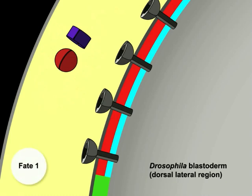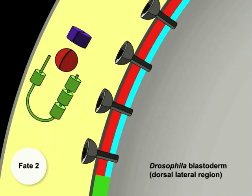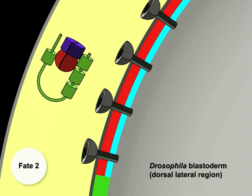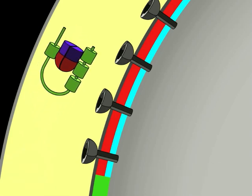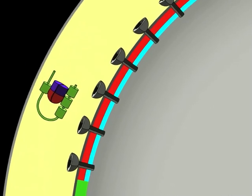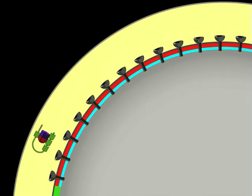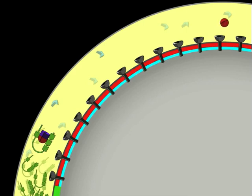Released DPP has two possible fates. It can bind to a receptor and signal, or it can be recaptured by another SOG-TSG complex. When SOG levels are high, as in the lateral domain, the probability of recapture is high, while at the dorsal midline, DPP is more likely to bind to a receptor and signal.